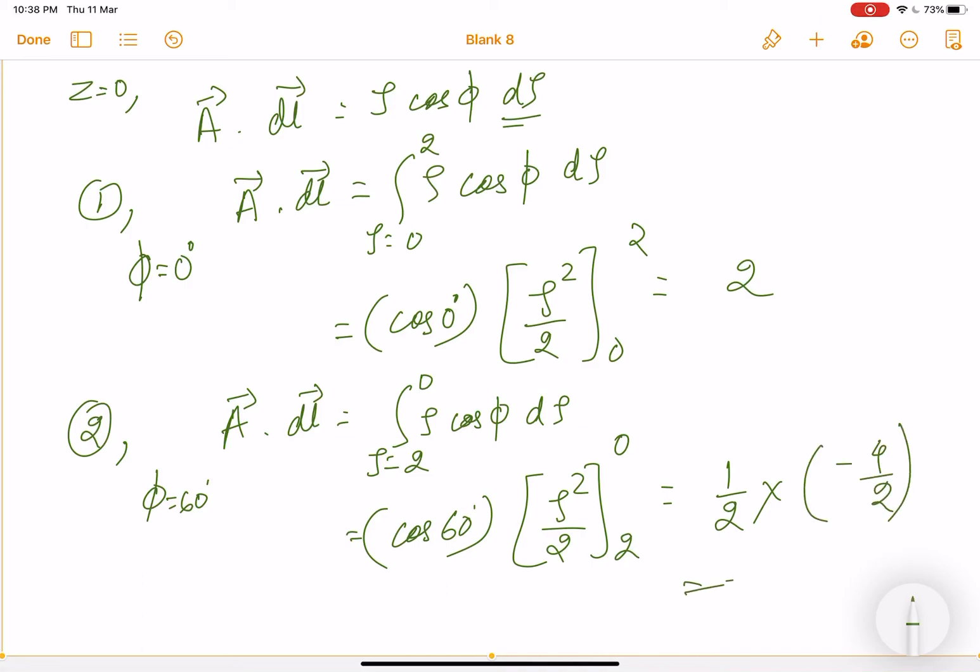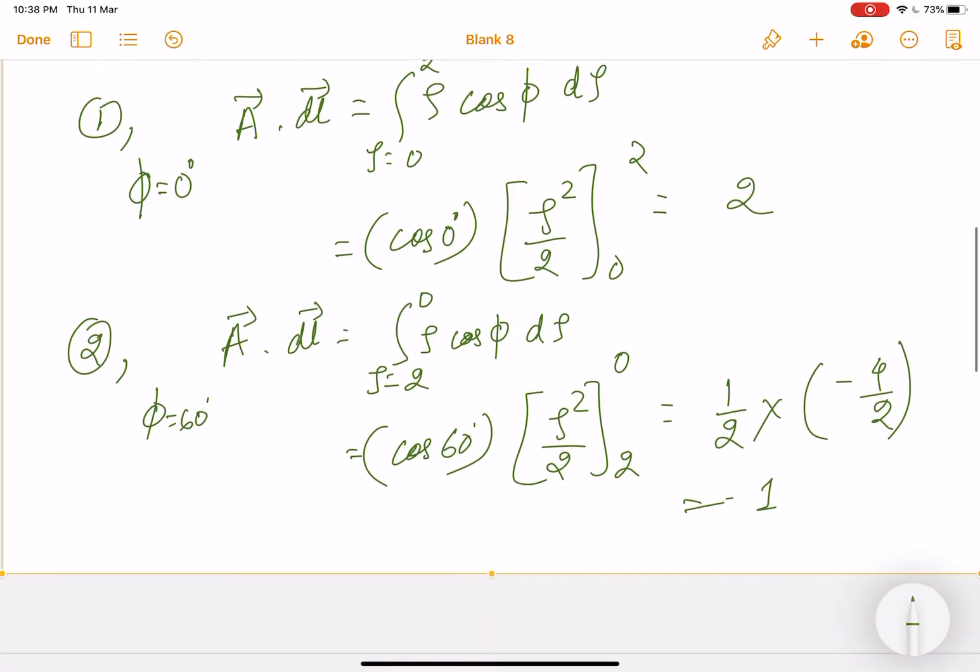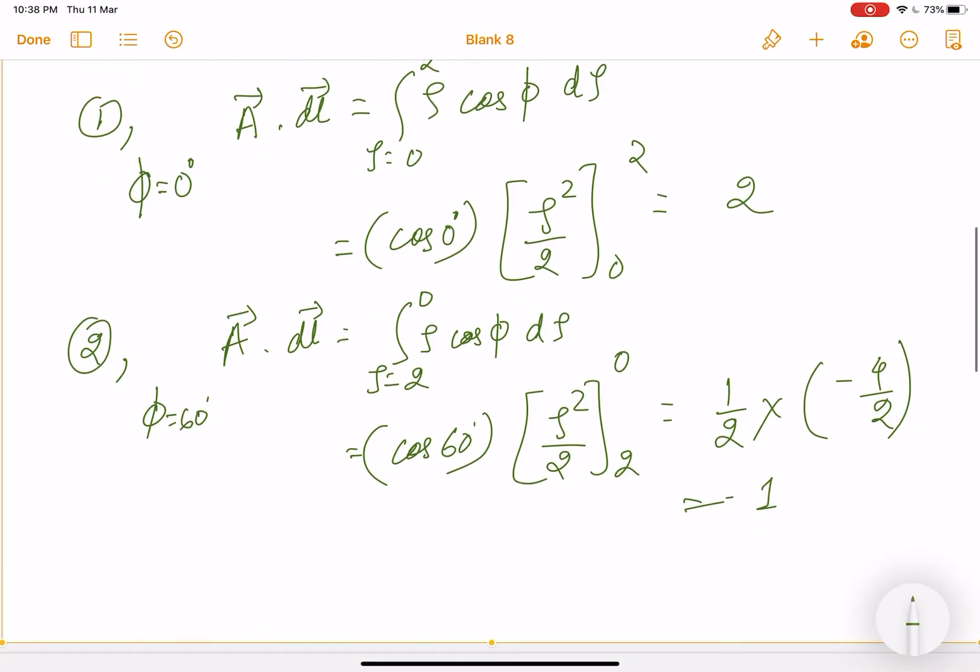paths 1 and 2, whatever I got. So basically I got 2 and -1, so my answer is 1. This is A dot dl; this is the final answer I am getting, that is 1. You guys also try this question. Thank you for this video.